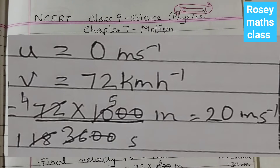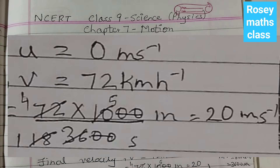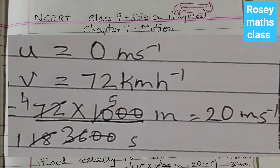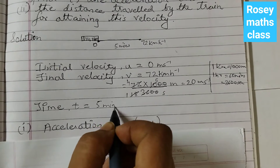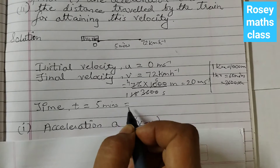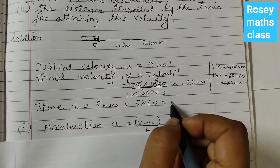Simplifying: 72 divided by 3600 times 1000 gives us 20 meters per second. The time given is 5 minutes, so we need to convert this to seconds. 1 minute is 60 seconds, so 5 minutes will be 5 into 60, which equals 300 seconds. Now we have all the units in proper form.